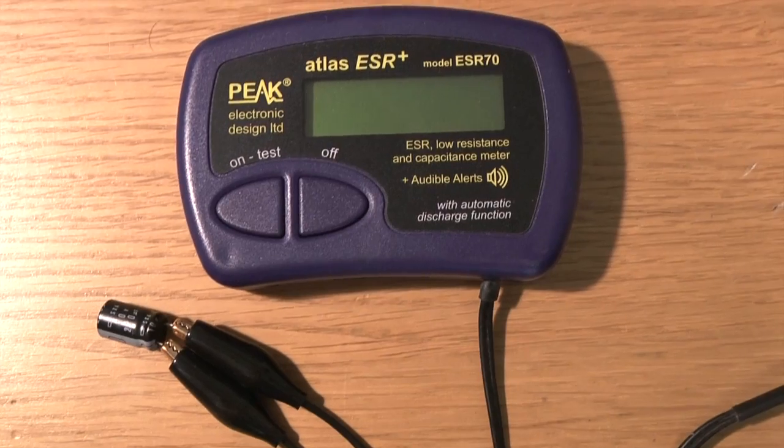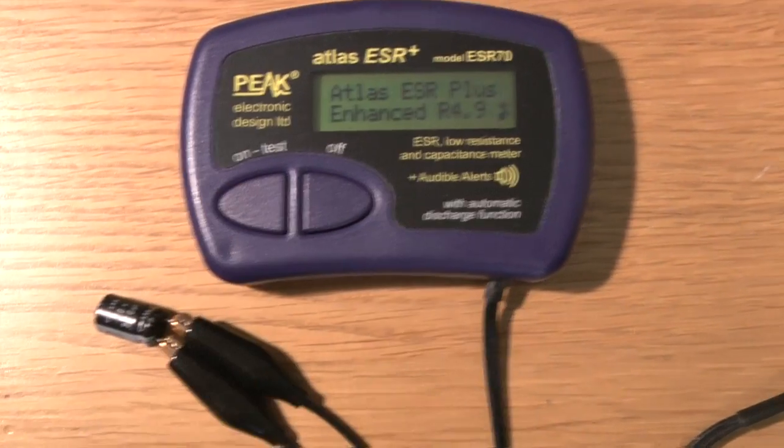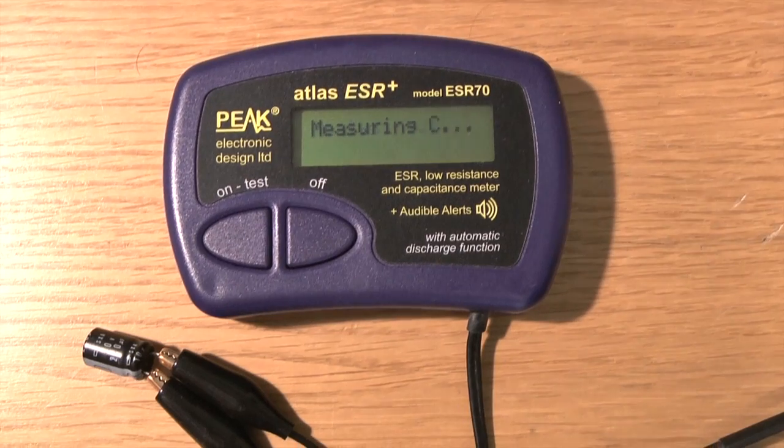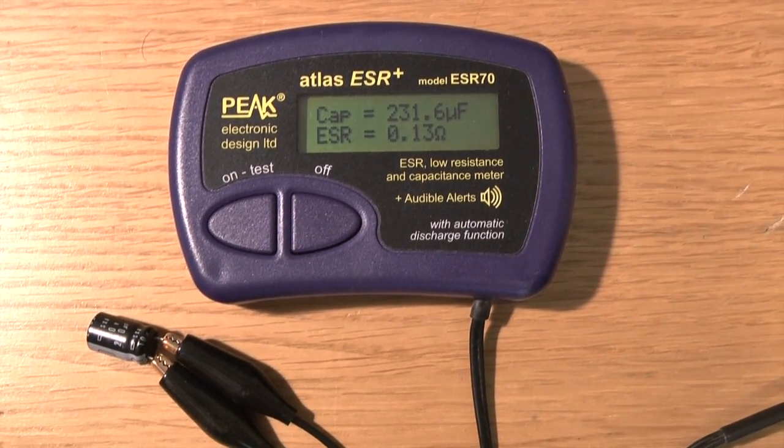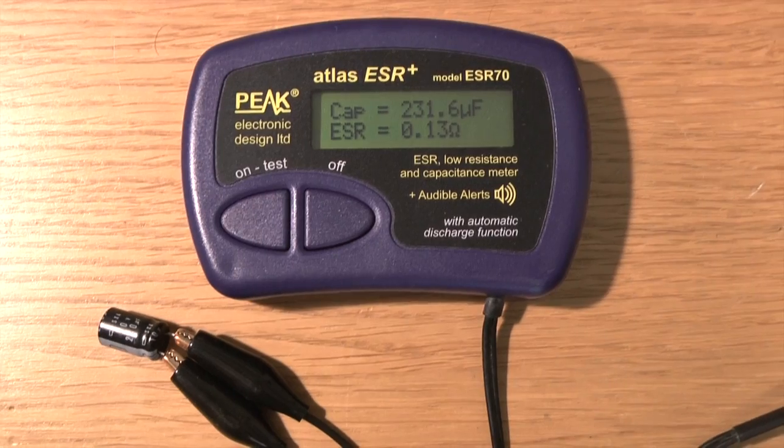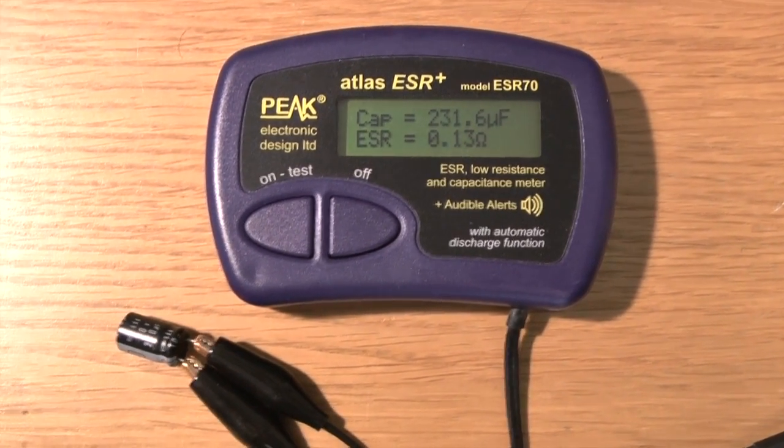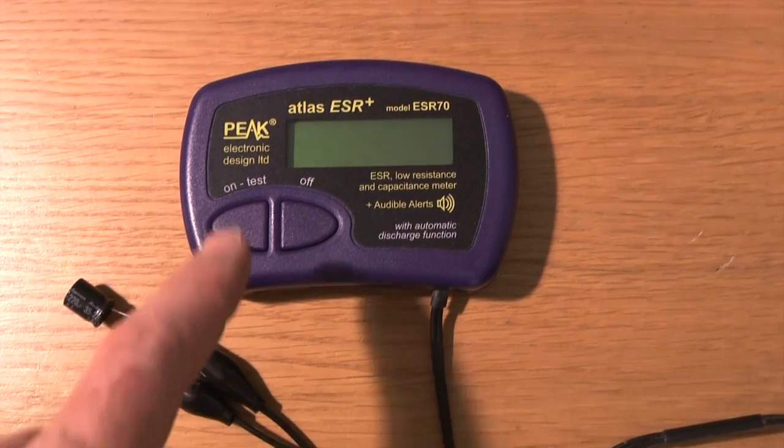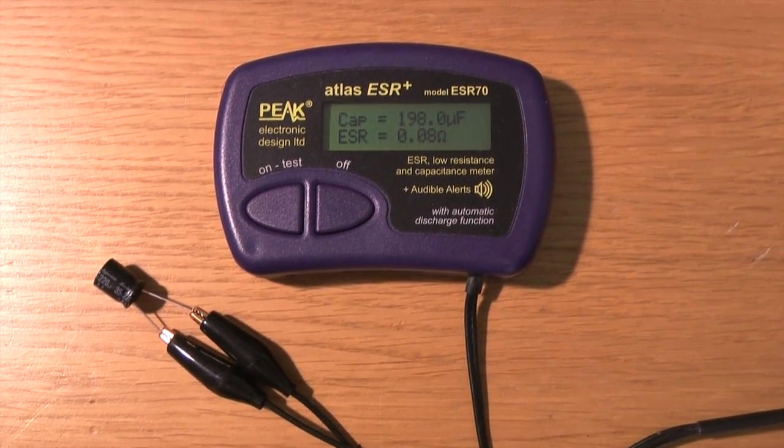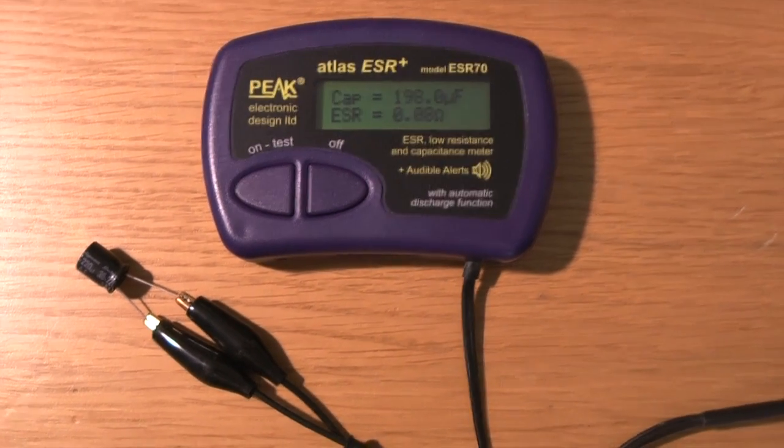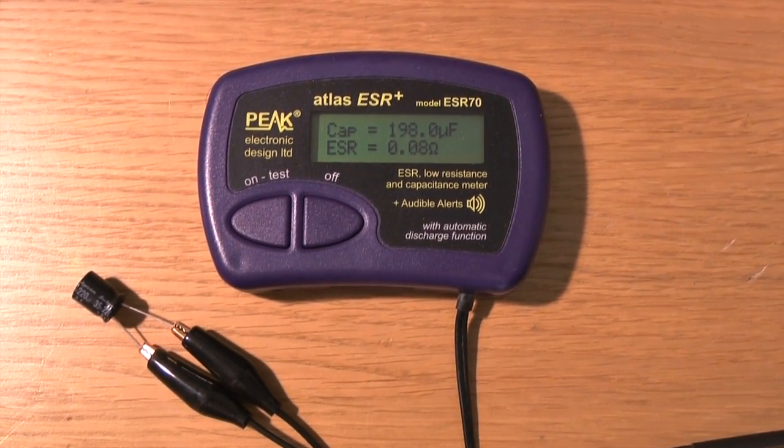Just a matter of interest, let's check C9 when I've removed. So actually not too bad. 231.6 microfarads and ESR 0.13 ohms. Let's check it against a new one. So this is a new one. OK, so a little less capacitance, but much lower series resistance.